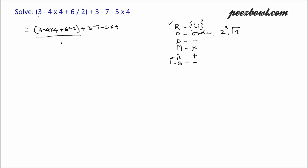We need to work on the parenthesis first. Within this parenthesis, division and multiplication both have equal priority. Whenever we have these two operations coming together, we need to perform from left to right. So with 3 minus 4 multiplied by 4, going left to right, we perform multiplication first: 4 multiplied by 4 is 16, plus 6 divided by 2 is 3.